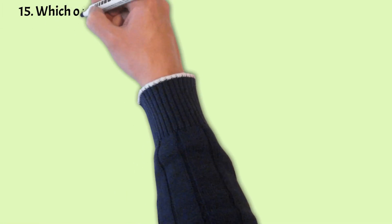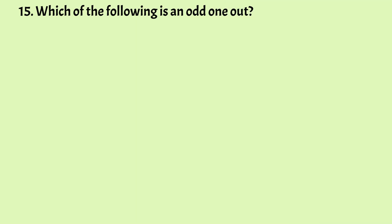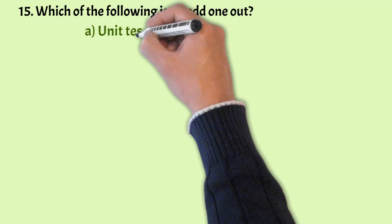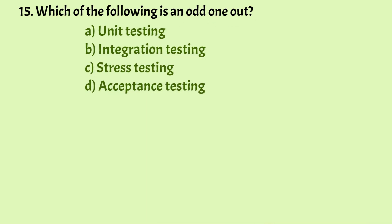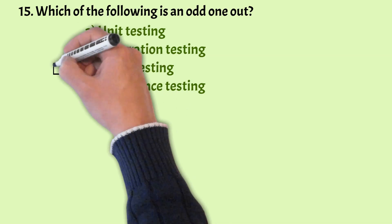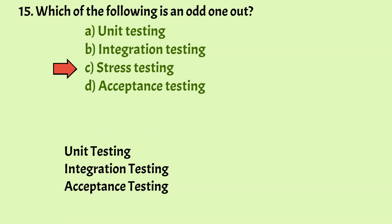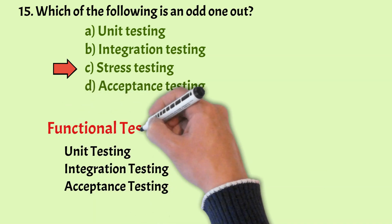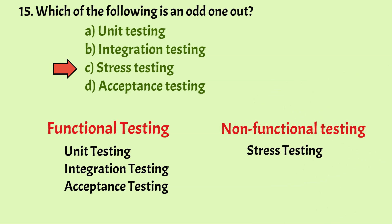Next: Which of the following is an odd one out? Options: Unit Testing, Integration Testing, Stress Testing, and Acceptance Testing. The correct answer is Option C, Stress Testing. Unit Testing, Integration Testing, and Acceptance Testing fall under Functional Testing, whereas Stress Testing falls under Non-Functional Testing. So Stress Testing is the odd one out.